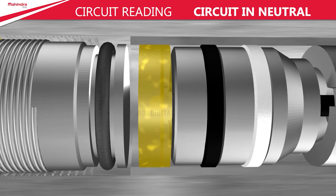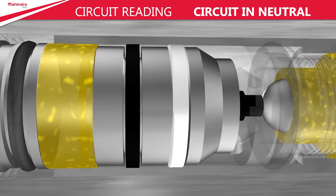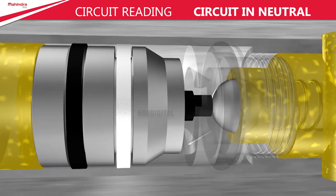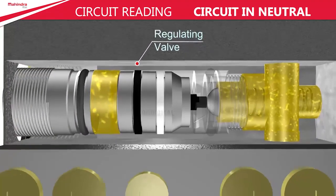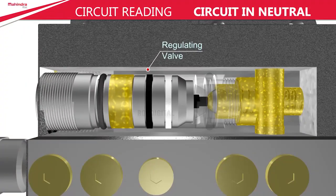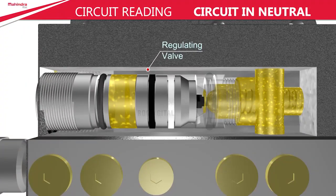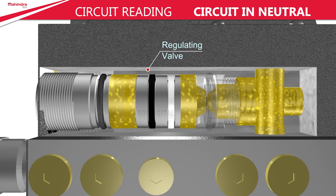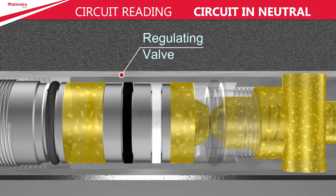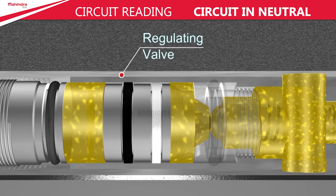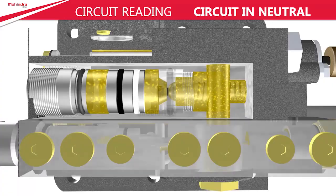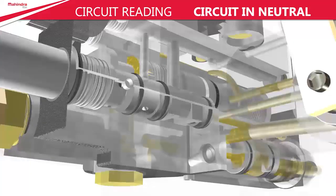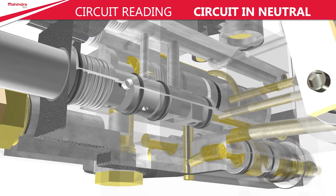Since the contact area above the regulating piston is more than that of the regulating ball and regulating seat, the force above the regulating piston will be more. This moves the regulating piston in a downward direction, pushing the regulating ball down and causing leakage in the oil path. The pressure behind the regulating piston is maintained uniformly due to distribution of oil from the orifice filter.